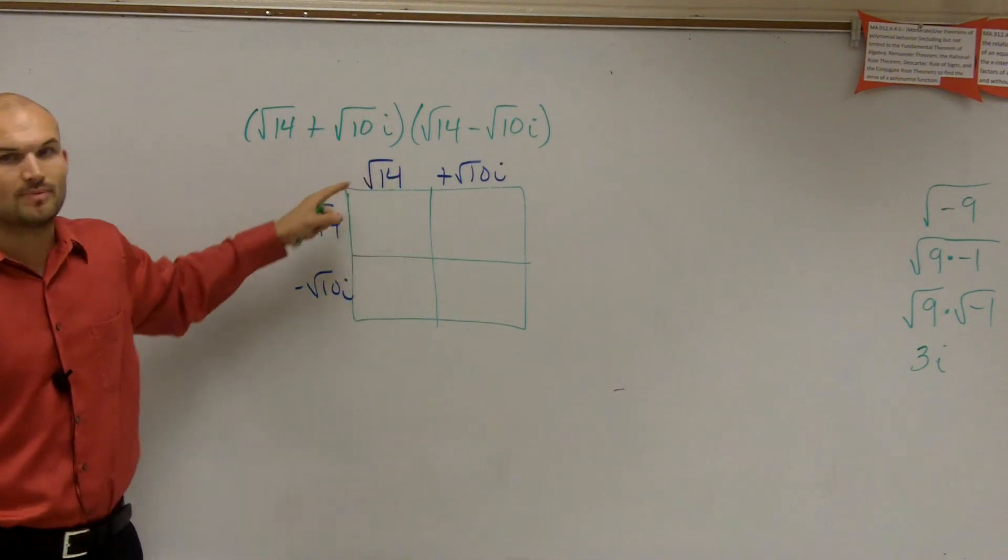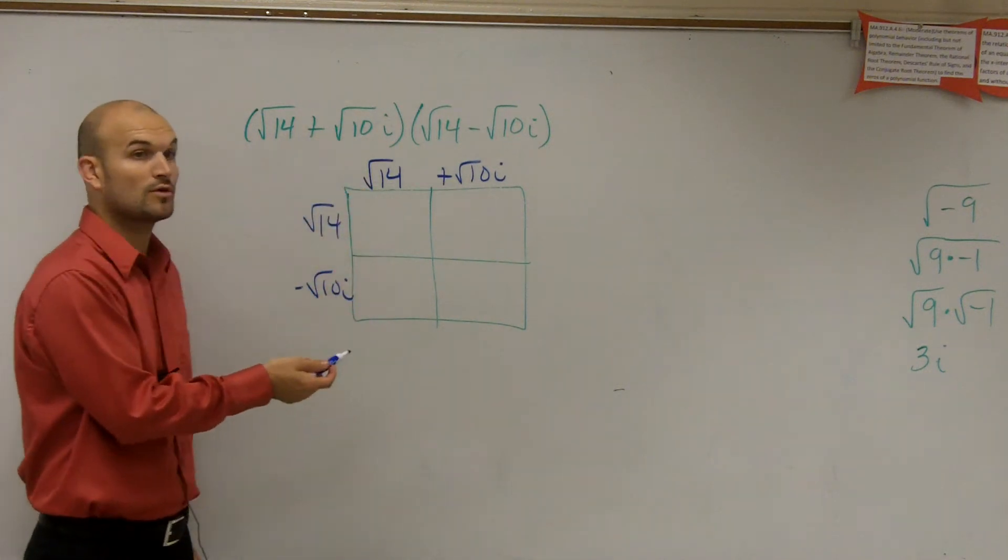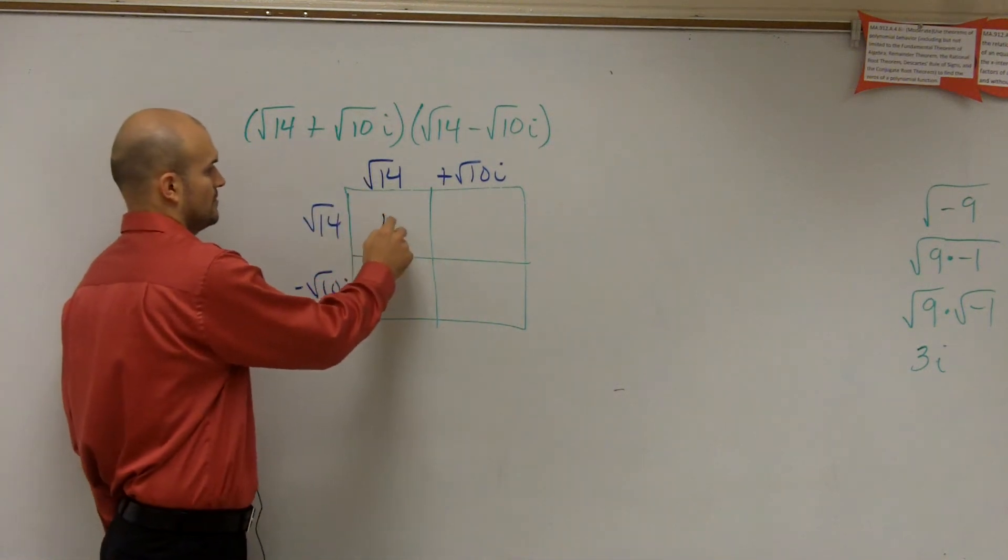Okay? So here, let's just multiply the side lengths for each square. Square root of 14 times square root of 14 is going to be square root of 14 squared which is 14.